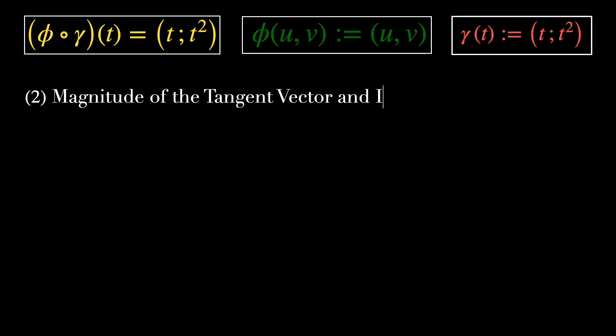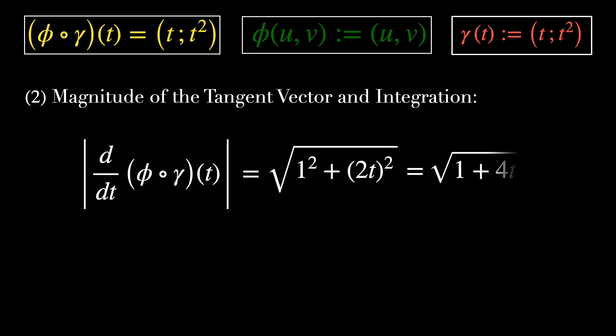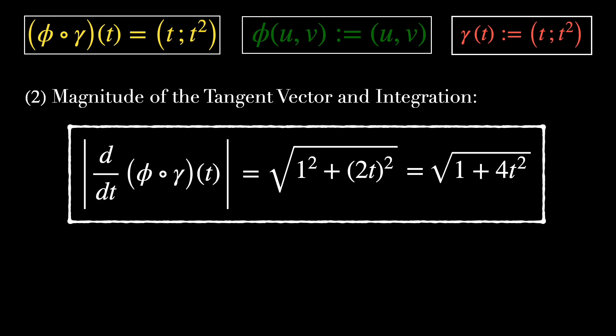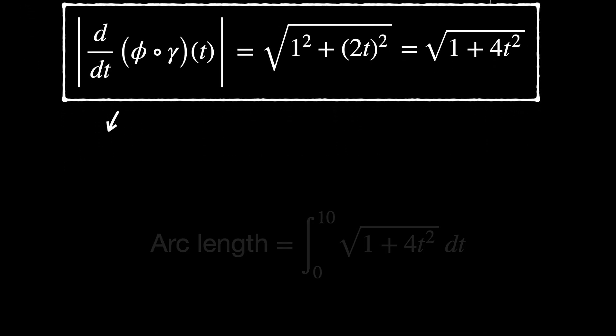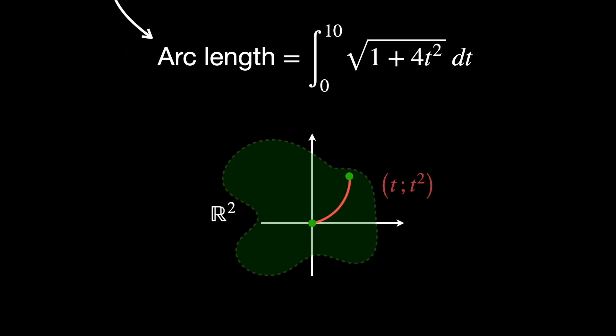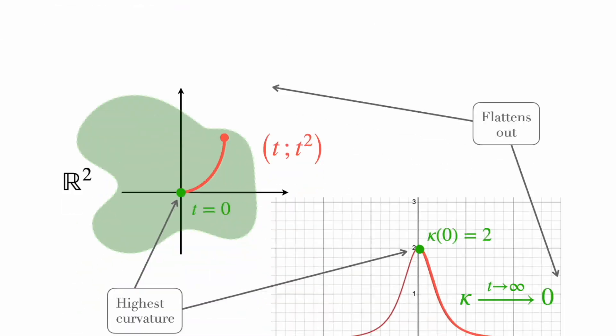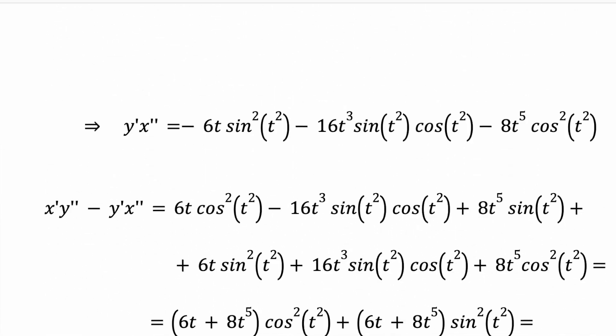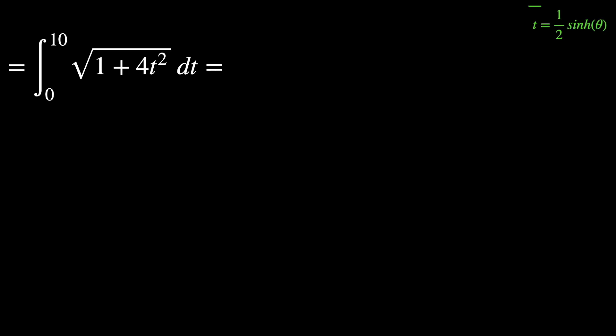Second, magnitude of the tangent vector and integration. The magnitude or Euclidean length of the tangent vector is the square root of 1 plus 4T squared. In order to find the arc length of the curve in R2 from T equals 0 to T equals 10, we integrate the magnitude of the tangent vector over this interval. This integral represents the length of the path T, T squared in R2 and can be evaluated as follows. We'll show the calculations really quickly here. But if you want to study them in detail, which we highly recommend you doing, check out the PDF link in the description. Otherwise, you can just skip to the final result.